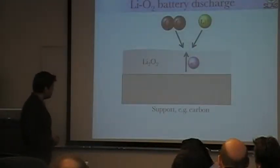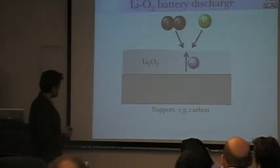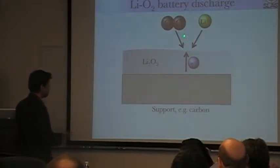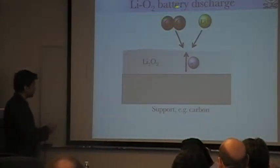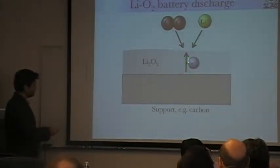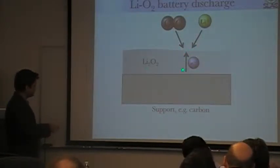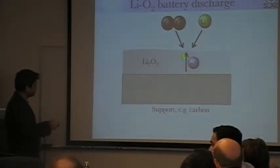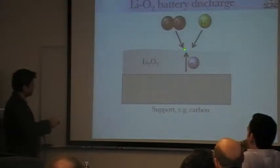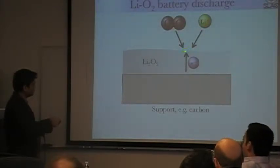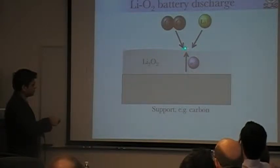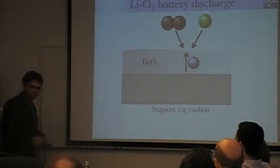This is essentially a problem of crystal growth where we have oxygen coming in, Li+ coming in, and electrons. These electrons have to flow through lithium peroxide — we'll come back to why this is important. These three species react at the reactive site to form lithium peroxide, so this is growth of lithium peroxide on top of lithium peroxide.